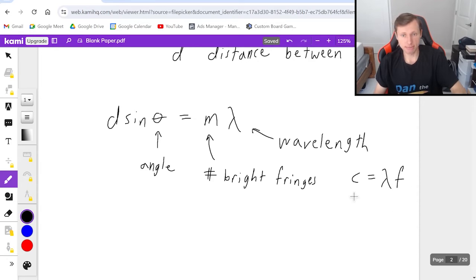Or we're solving for it using this equation, c equals lambda times f, where c is the speed of light, 3 times 10 to the 8th, and f is the frequency in hertz. And with that, that's all we need to know for the diffraction grating.